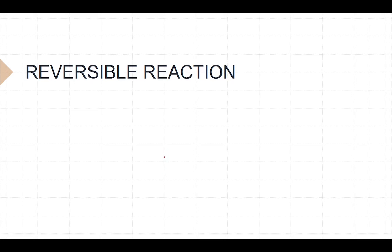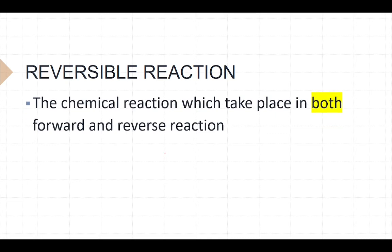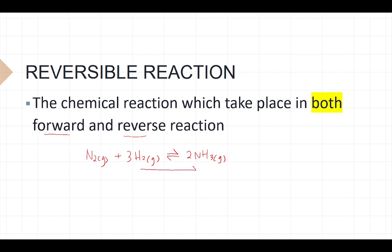So what is a Reversible Reaction? A Reversible Reaction is a chemical reaction which takes place in both forward and reverse directions. For example, N₂ gas reacted with 3H₂ gas — shown with a reversible arrow — to become 2NH₃ gas (ammonia). This reaction is reversible because it takes place both forward (left to right) and in reverse (right to left). The product can become the reactant and the reactant can become the product, as shown by the double arrow.